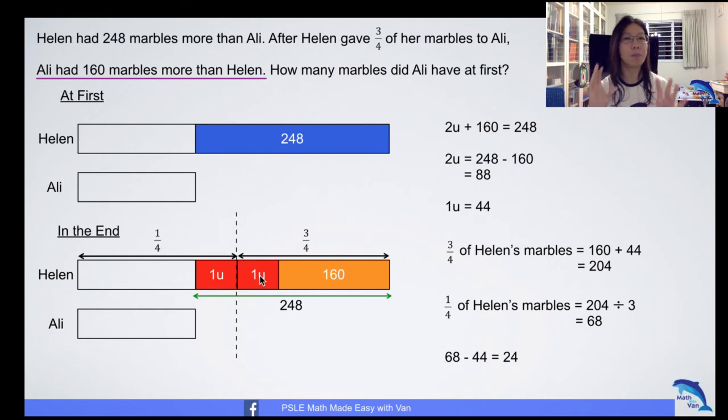So that is your answer, and for this question, the beauty of it is you can work it out, check your answer to see if you derive the same information as stated. So you can count. If Ali had 24, then Helen would have 248 plus 24, and so on. You work out what is three quarter of hers, then you give away three quarter of Helen's and add the three quarter back to Ali. You see if at the end you get the same difference of 160, which in this case you should. This is how you do your problem solving.